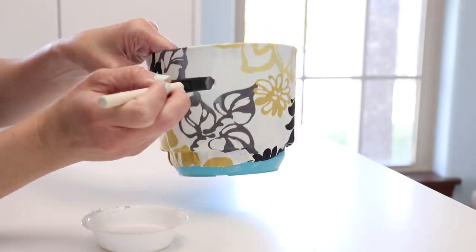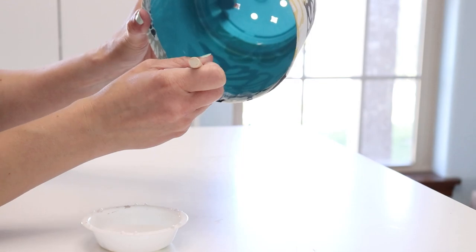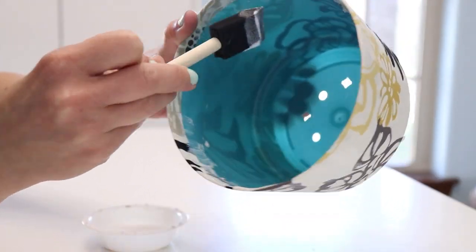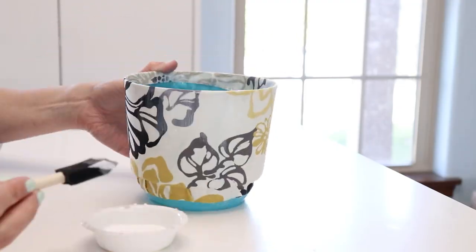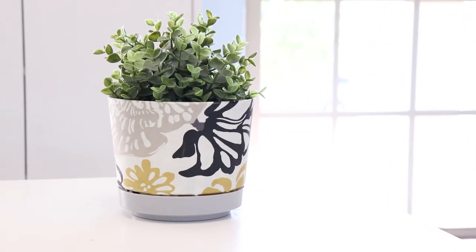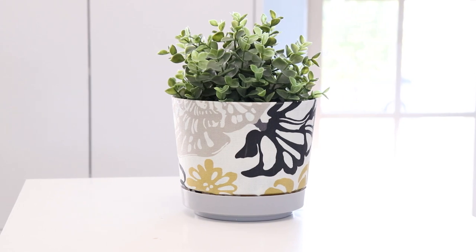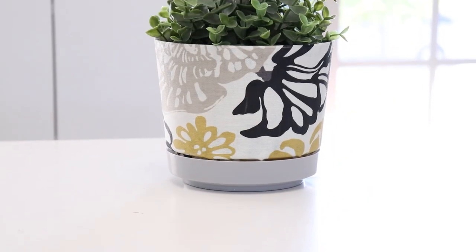I would still recommend using this as an indoor planter. Now we're going to grab the gray base from the other plastic pot and pair it with this beautiful yellow, black and gray fabric and use it as an indoor planter.